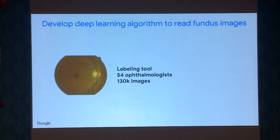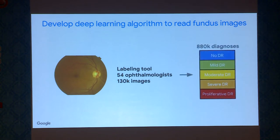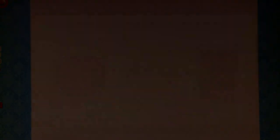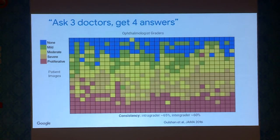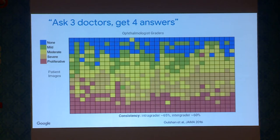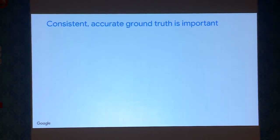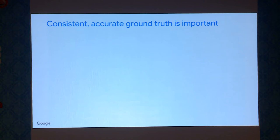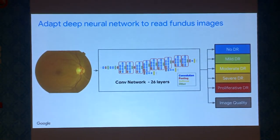We first obtained 130,000 images from our partners, and we hired ophthalmologists to grade them, getting 800 diagnoses in total. One of the issues is that when we ask different doctors, they may give different answers. There are many ways to come up with a single label — taking a majority vote between them, or going through a discussion process where they talk with each other and come up with a label. It's very important that we get a single consistent labeling, both for training and evaluation. Using those labels, we trained a deep convolutional neural network.